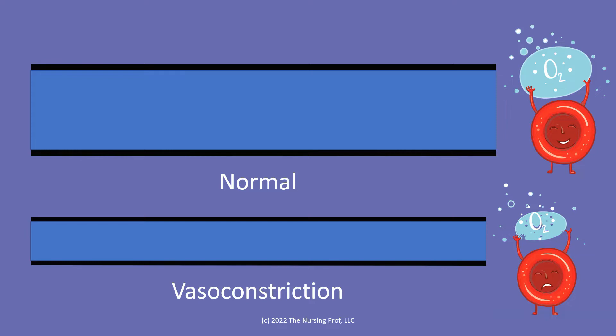You see these two blood vessels here. We have the normal blood vessel at the top and vasoconstriction on the bottom. With the normal blood vessel, we have more blood bringing oxygen to the tissues. In the vasoconstriction, we have less blood bringing oxygen to the tissues, as you see with the little frowny face. So less oxygen is getting to the tissues and we can't provide enough perfusion to the body.